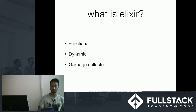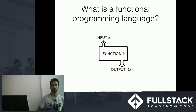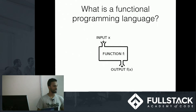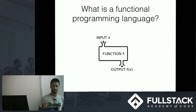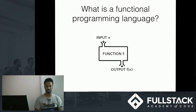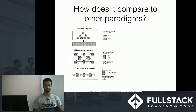Before I dive straight into Elixir, I'd like to talk about functional programming languages in general. So, what is a functional programming language? I see programming languages as a way to write instructions to a computer so it can tell what to do. In a functional programming language, we use functions which we got from math — things that take an input and give us an output. And in functional programming languages, that's our main construct: functions.